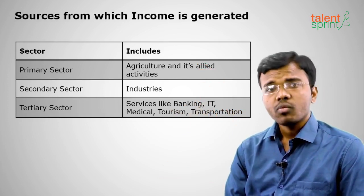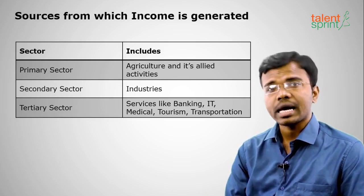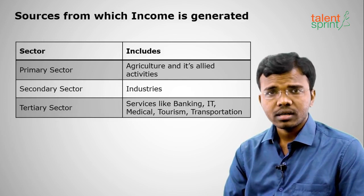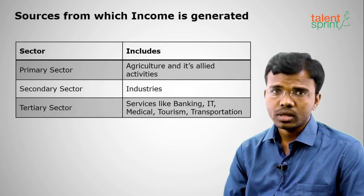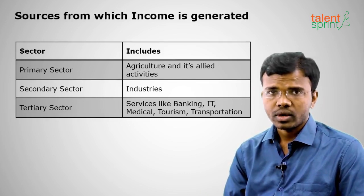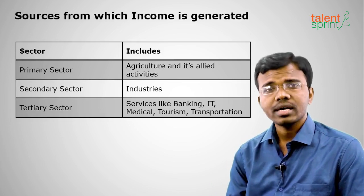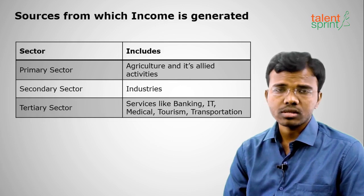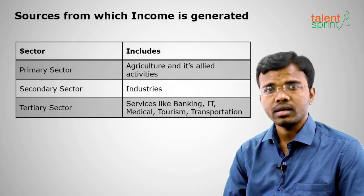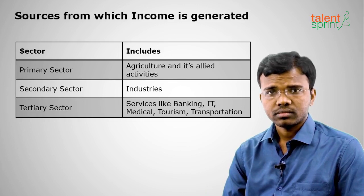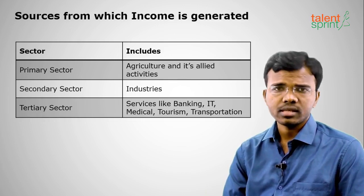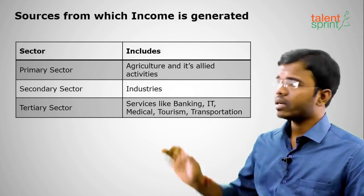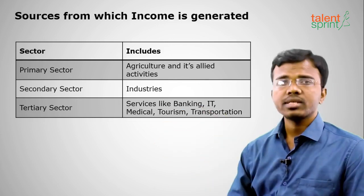Adam Smith, the father of economics, says economics is about how nations gain and lose wealth. He wrote this in his book 'An Inquiry into the Nature and Causes of the Wealth of Nations' in the 1770s. These are the three sectors through which income is generated in any nation.